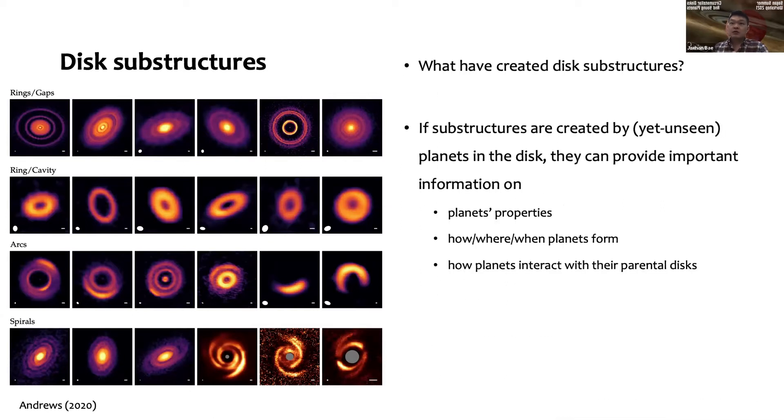If these substructures are created by planets in the disk, then we can learn a lot about planet formation processes or planet properties themselves—like mass and semi-major axis of their orbits—or we can also think about how and where and when planets form in protoplanetary disks, and how planets interact with their parental disks.